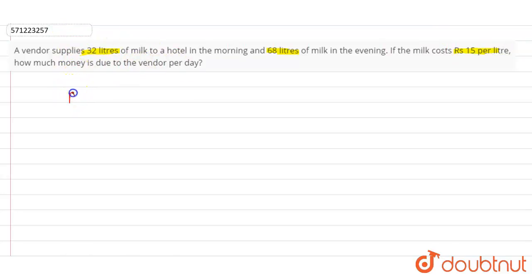So firstly, milk supplied in morning is 32 liters, and milk supplied in the evening is 68 liters.